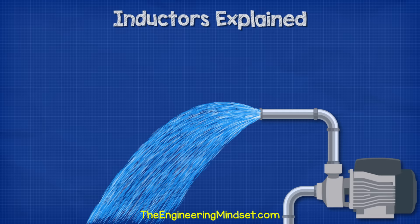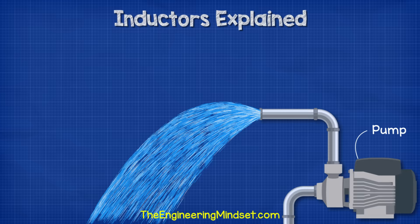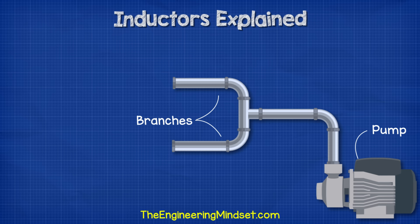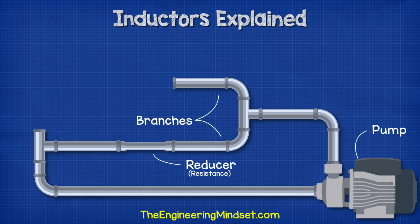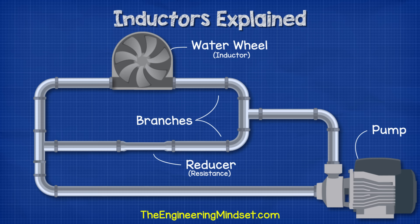So how does an inductor work? I want you to first think about water flowing through some pipes. There is a pump which pushes this water, and the pump is equivalent to our battery in the circuit. The pipe will split into two branches, and the pipes are equivalent to our wires. One branch has a pipe with a reducer in it, and that reduction makes it a little harder for water to flow through it. So the reducer is equivalent to resistance in our electrical circuit.